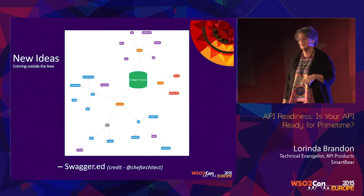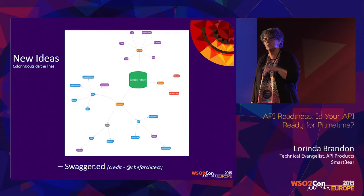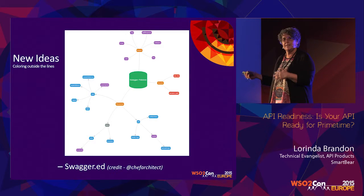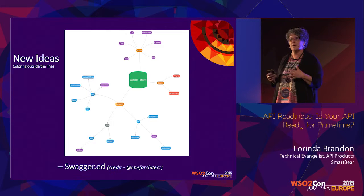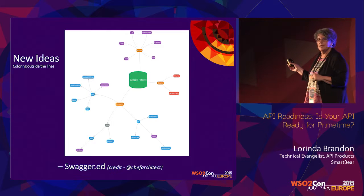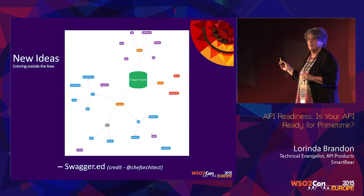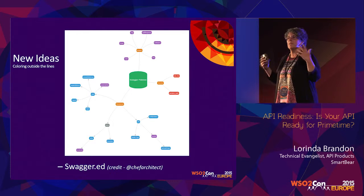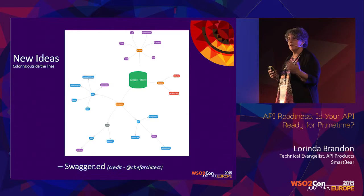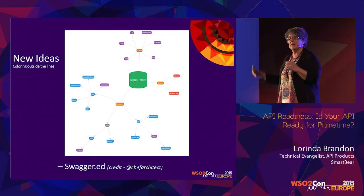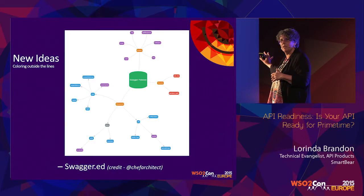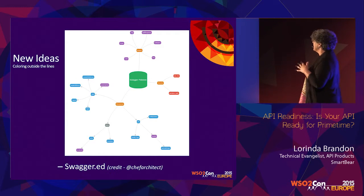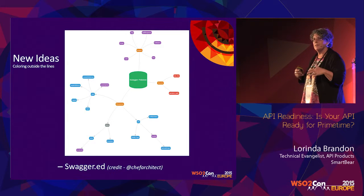People are starting to realize that text-based service descriptions aren't really hitting the mark, and some pretty clever ideas are emerging. One is called Swagger.Ed — an open source Chrome extension for Swagger. You add it to your Chrome browser, and when you look at an API description in Swagger, it generates a visual view so you can quickly see the entire surface of your API. It's a very quick, easy way to comprehend the capabilities of that API.